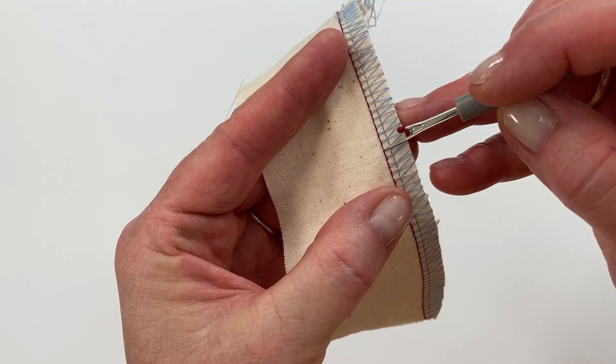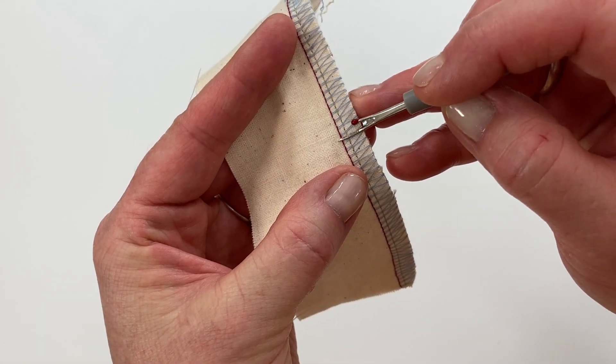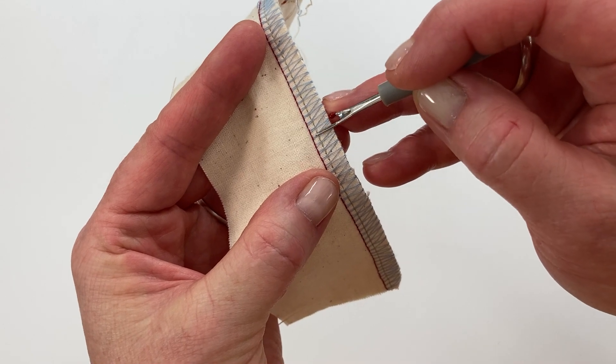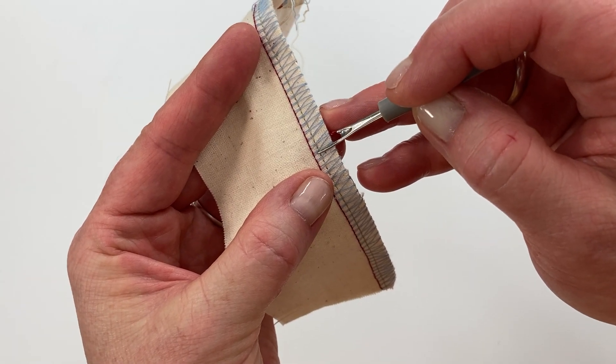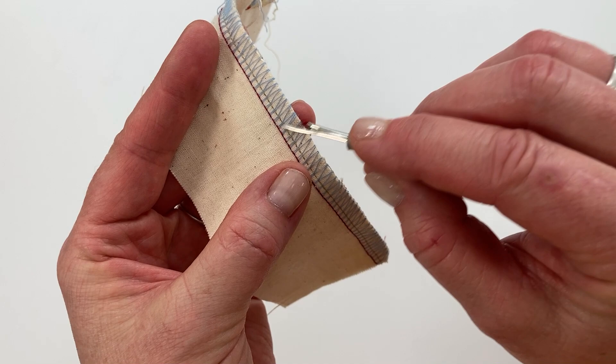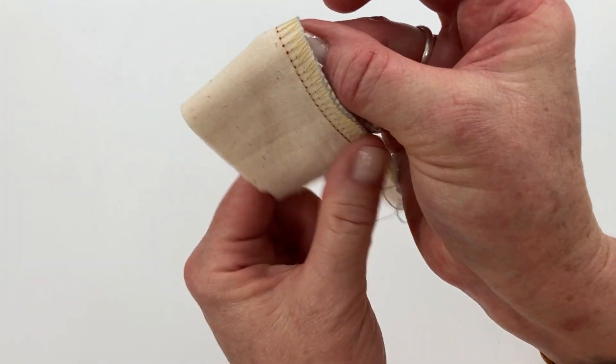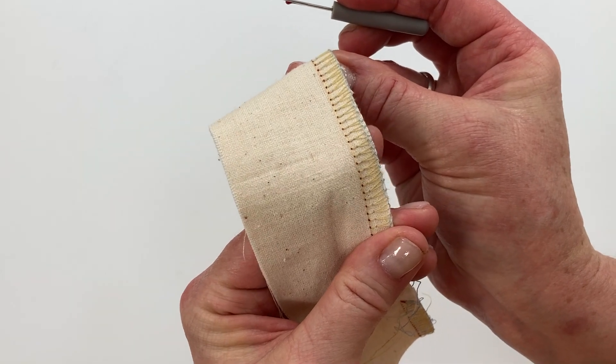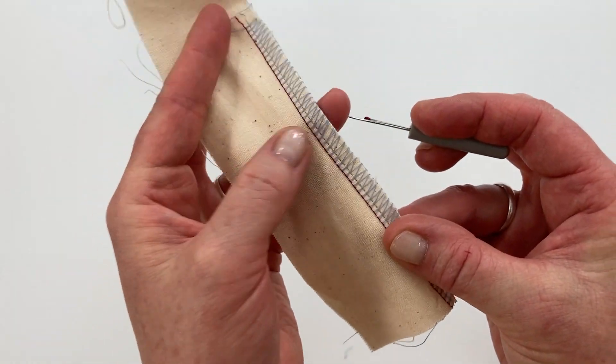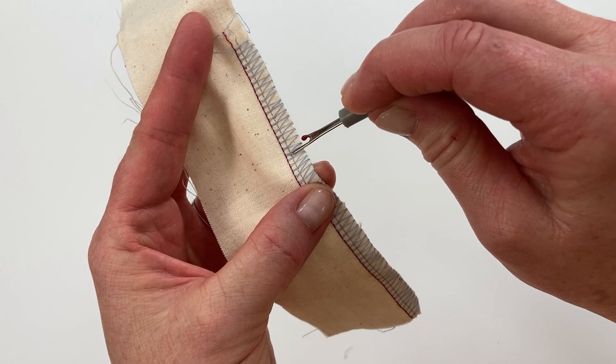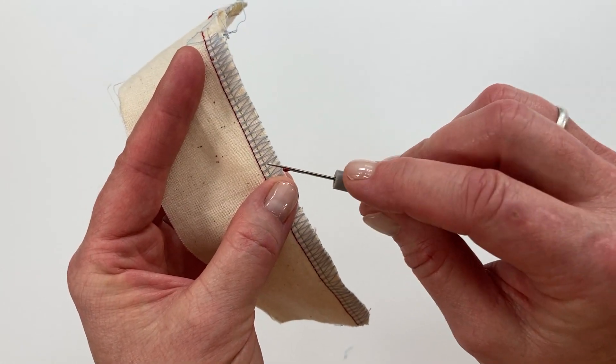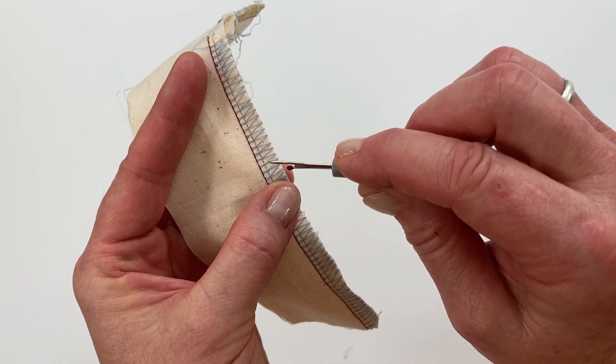So this red stitch right here is the left needle and this tan thread right here is the right needle and these are the looper threads. Now this is blue on the top and yellow thread on the bottom. So there's two loopers and two needle threads. All you need to worry about are the two needle threads.